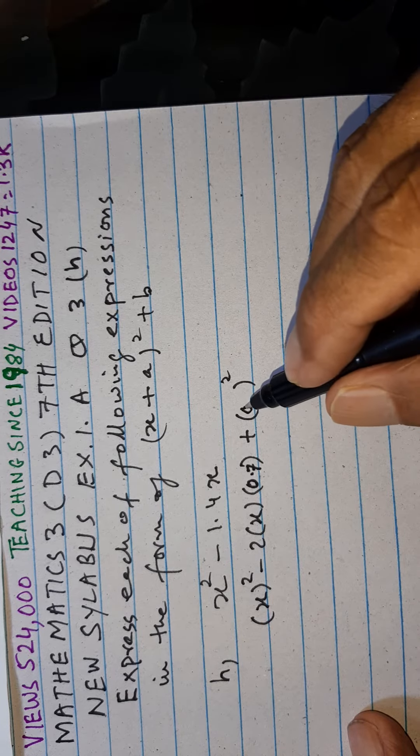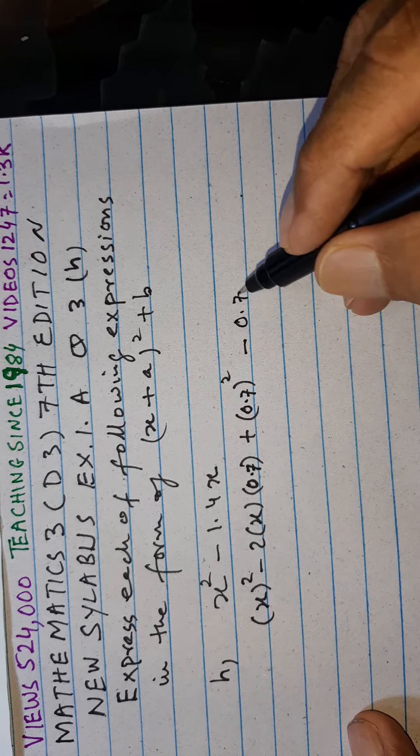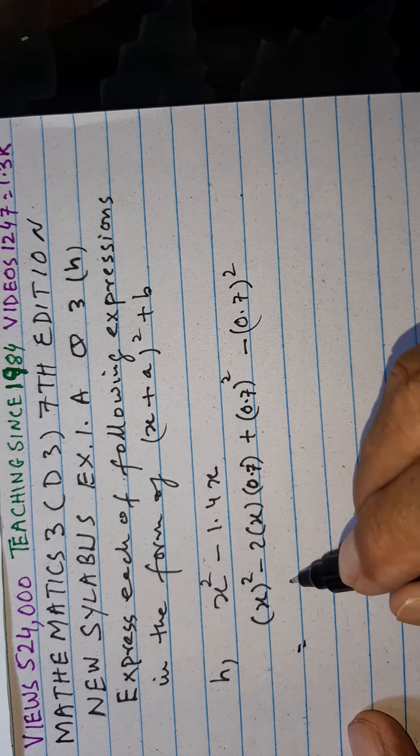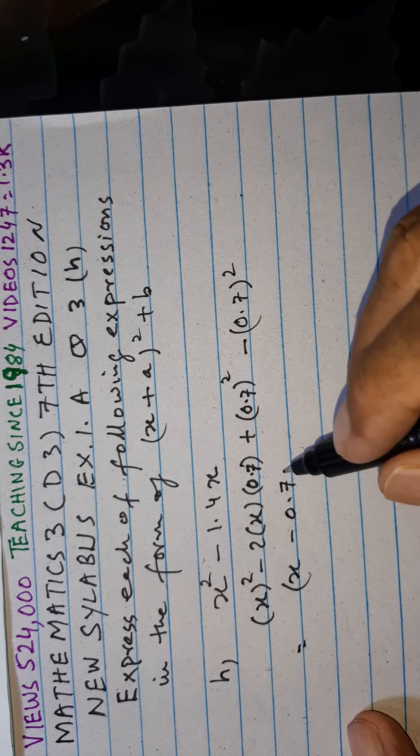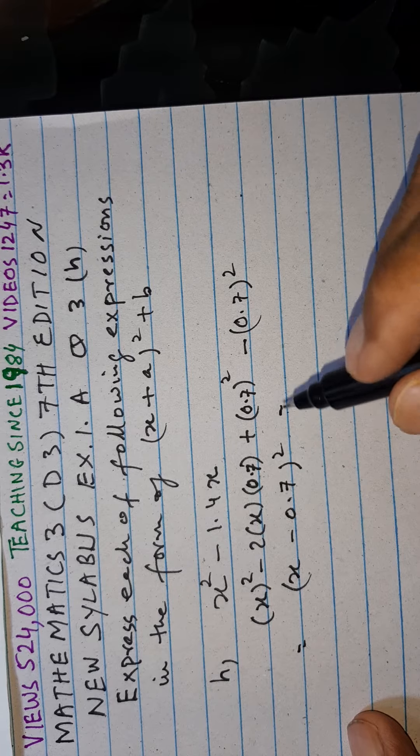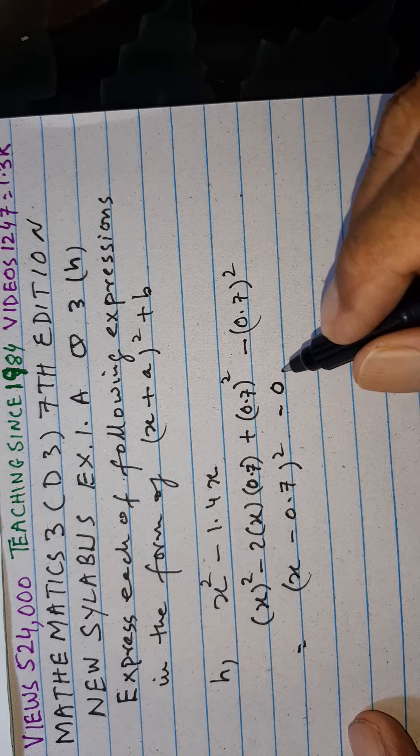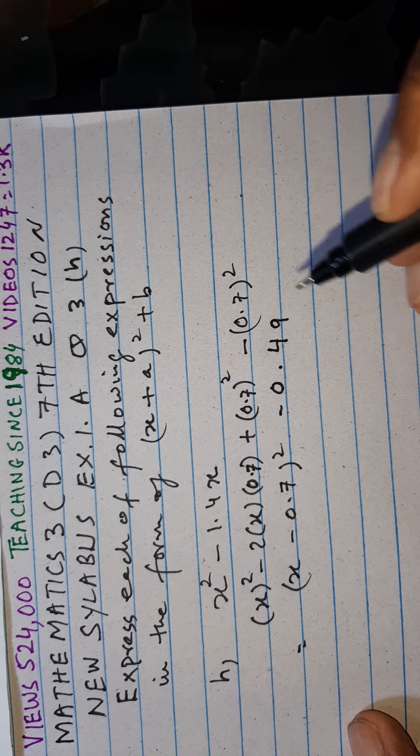Here we must write 0.7 and we must minus 0.7 whole square and this becomes x minus 0.7 whole square minus 0.49.